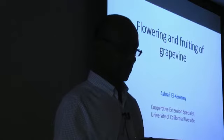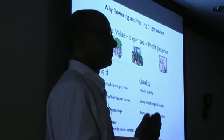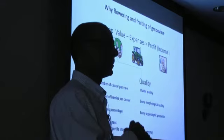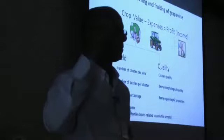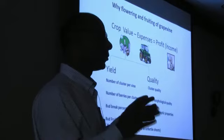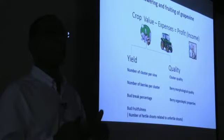Why do we need to understand this? Because the crop value comes from the yield and the quality of the grapes we are growing. Yield includes cluster numbers, number of berries per cluster, bud break percentage, and bud fruitfulness — how many clusters you get per shoot. We need to understand these four topics to be able to control them. You cannot control what you don't understand. If you understand every step, you can control it and get more profit from your vineyard.